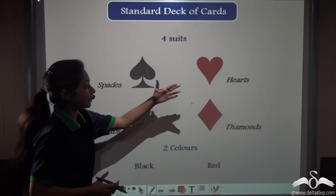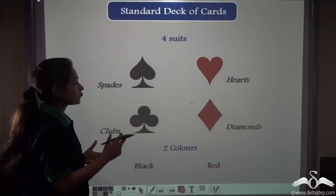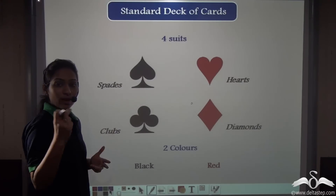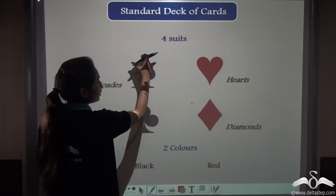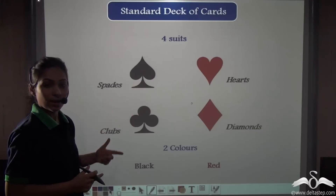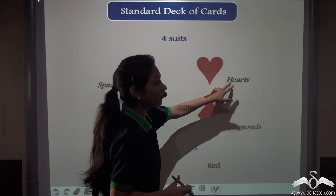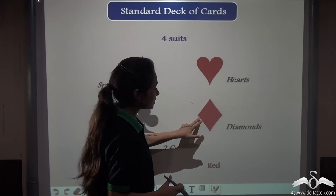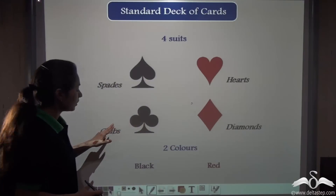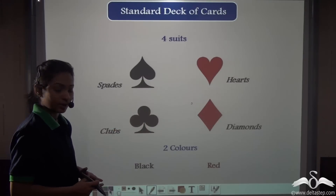Generally these names are not written on the cards. Instead, symbols are used to represent these names. Whenever you see the spade symbol on a card, it is a spade card. A heart symbol means it is a card of Hearts, a diamond symbol means it belongs to Diamonds, and a club symbol represents a club card.